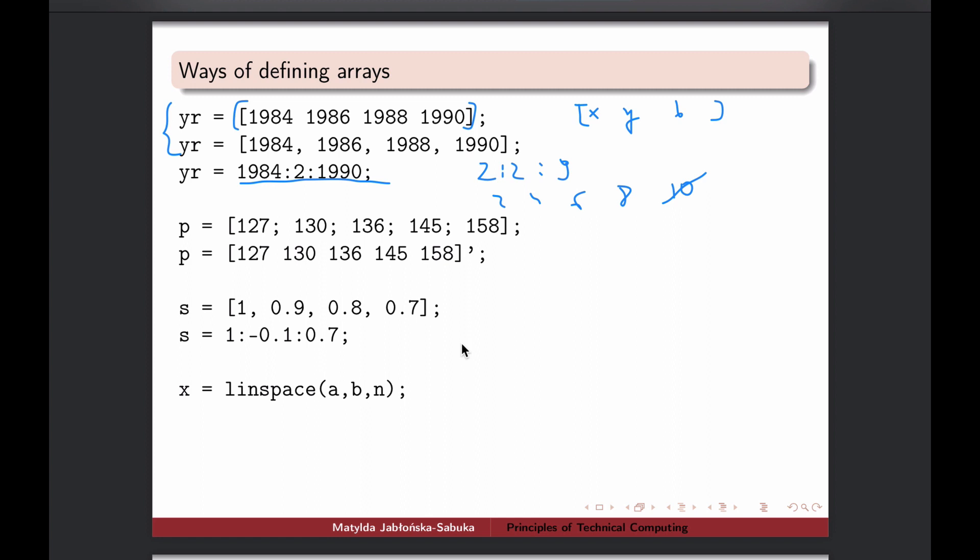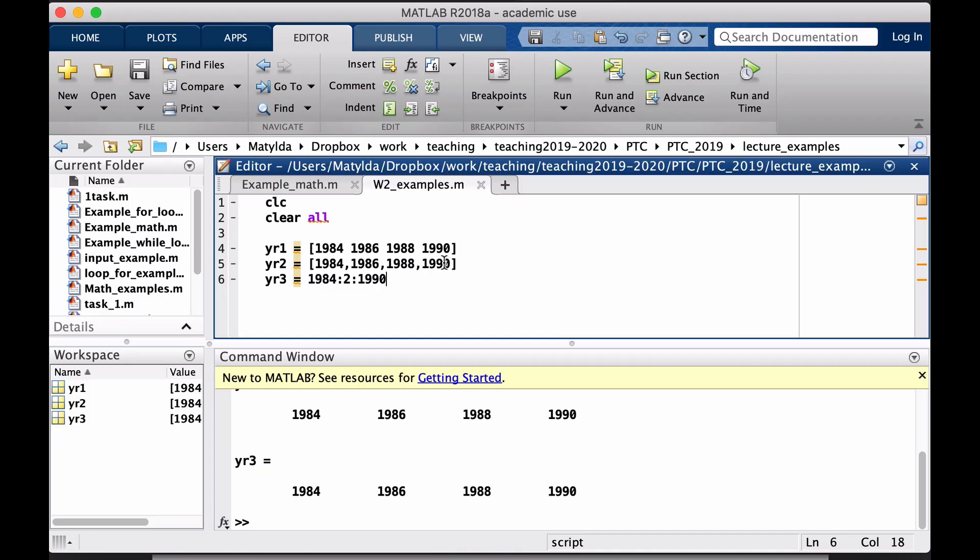We can define column vectors as well. One way is to separate your individual elements with a semicolon. Because semicolon, now in this case, once it's enclosed in an array, it doesn't mean we are hiding results. It means we are jumping to the next row. So that's the role of semicolon. It's a different meaning than when it's just at the end of the command line.